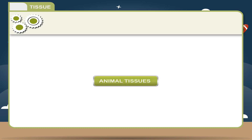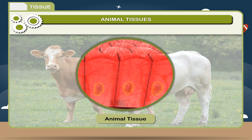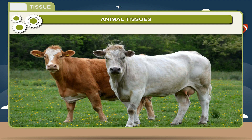Animal tissues. Like plants, animals are also made up of different types of cells. When a group of similar cells perform a particular function in an animal, it is referred to as tissue. These tissues can be differentiated into four groups according to the structure and function of the cells. The four types of tissues are: